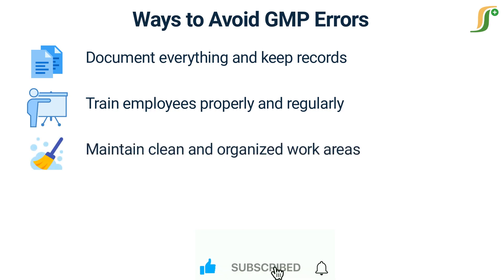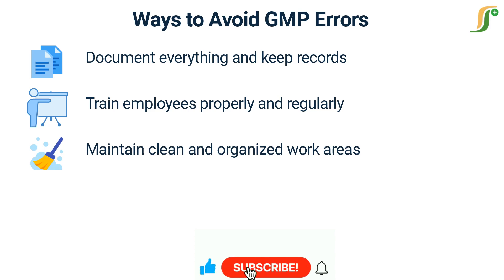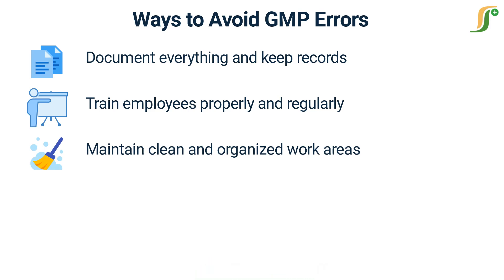Maintain clean and organized work areas. Maintaining a clean and organized work environment is crucial for preventing cross-contamination and ensuring product quality. All work surfaces, equipment, and tools should be cleaned and sanitized regularly, and employees should be trained to keep their work areas clean and tidy.